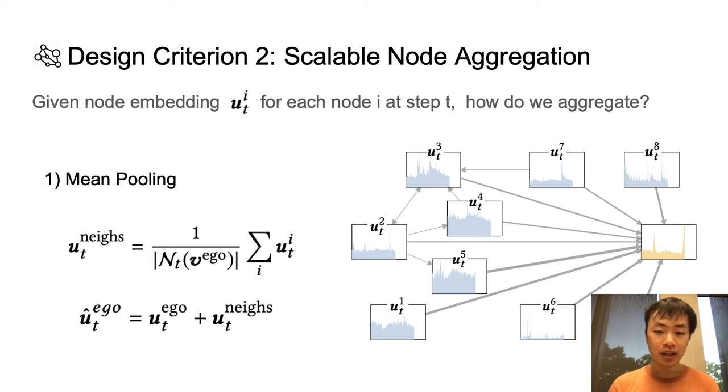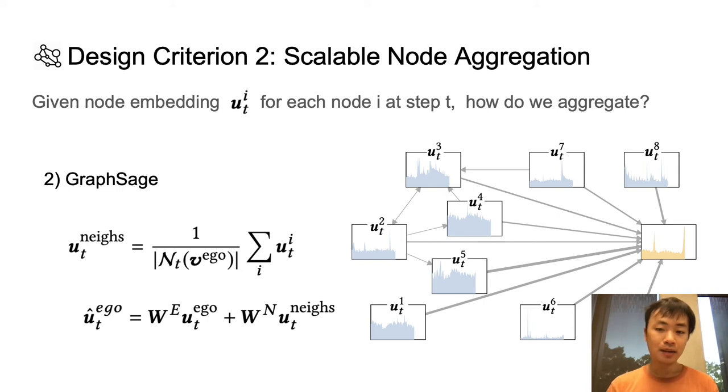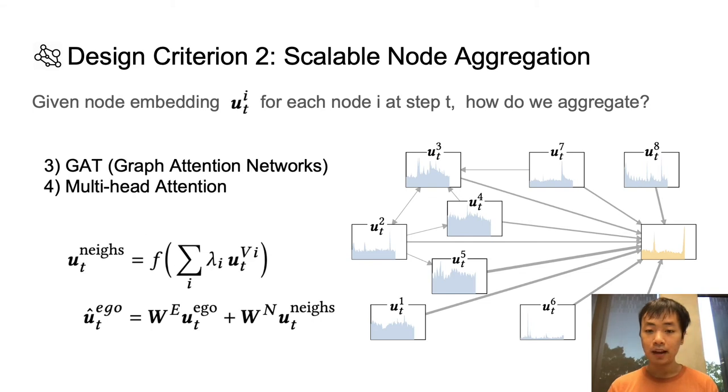Now, focusing on the second equation, if we have the extra linear projections, the two W matrices here, then we will obtain the graph sage approach, the second method of aggregation that we tried. And now if we focus on the first equation, you might wonder, what if instead of taking an average, we take a weighted average of the neighbors?